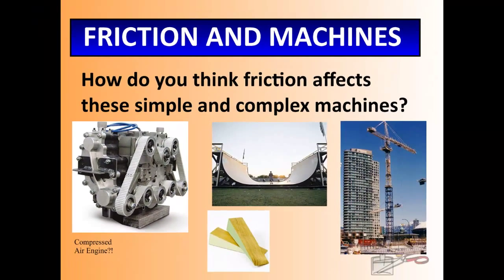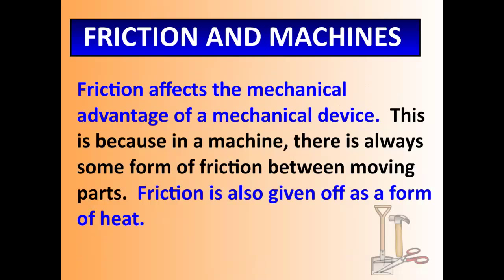Every time machines experience friction, it takes more force for the machines to work in order to overcome friction. Friction affects the mechanical advantage of a mechanical device. This is because in a machine, there is always some form of friction between moving parts. Anything that moves experiences friction between the two parts. It's also given off as a form of heat. You put your hands together, rub them together really fast, you keep rubbing. That's friction, right? And as you keep rubbing, you'll notice that your hands become warm. That is sometimes what happens with friction. It generates heat.